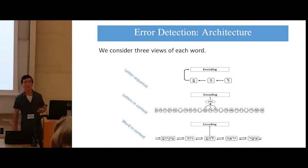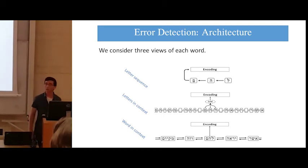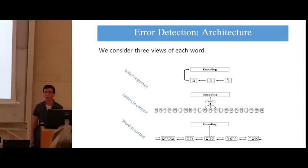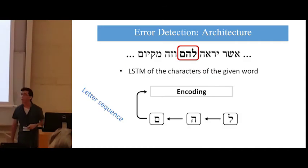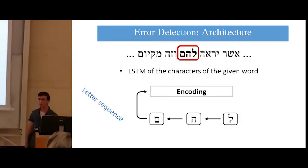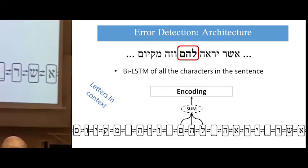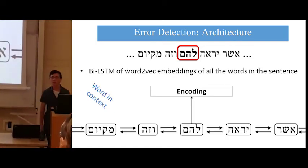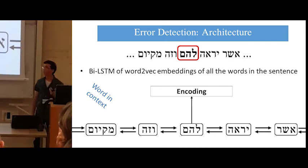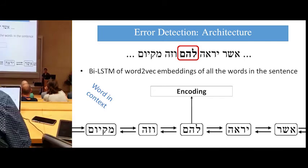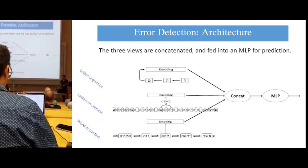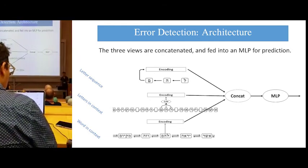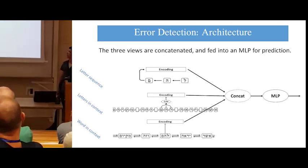We train a neural classifier to determine, at each word position, whether the given word is a mistake or not. For each given word, we consider three views. The first view is an LSTM encoding of the characters of the given word. The second view is a bi-LSTM encoding of all the characters in the sentence. The third view is a bi-LSTM encoding of all the words in the sentence. We concatenate all three views together and feed them into an MLP for prediction.